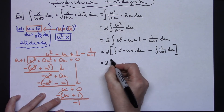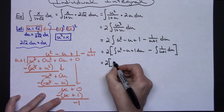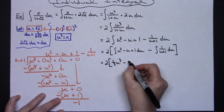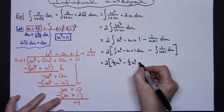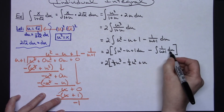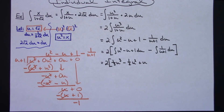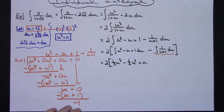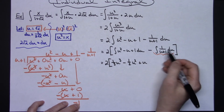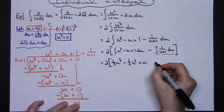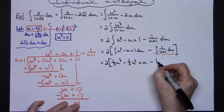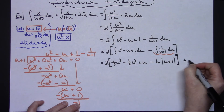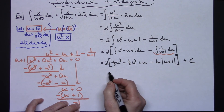Integrating, we get 2 times one-third u cubed minus one-half u squared plus u, minus the natural log of the absolute value of u+1, plus C. The integral of 1 over (u+1) can be done in your head or with a quick u substitution, integrating to ln|u+1|.